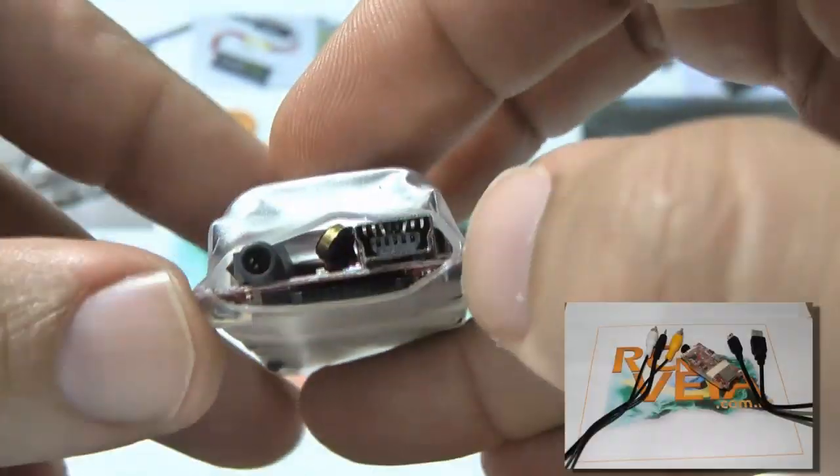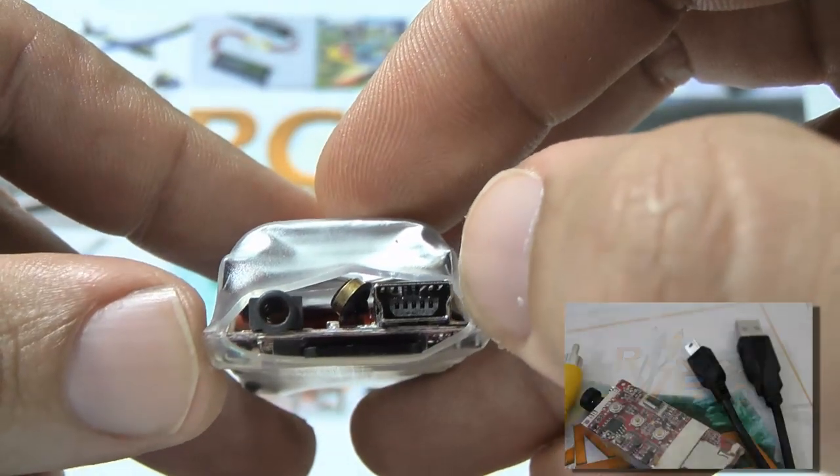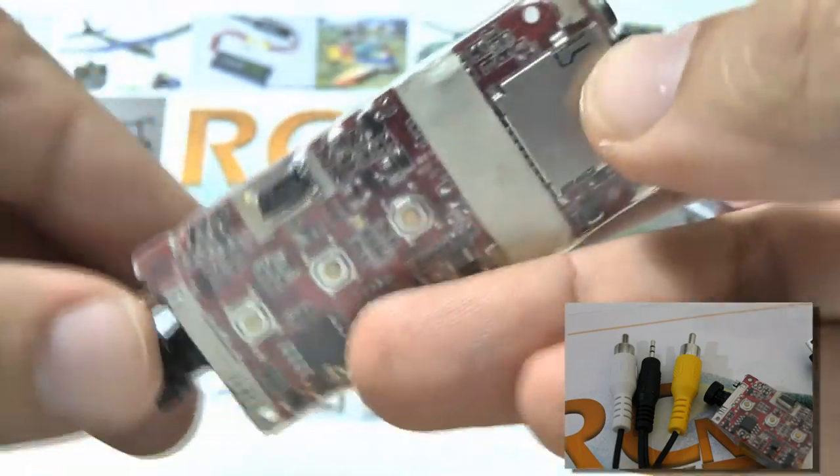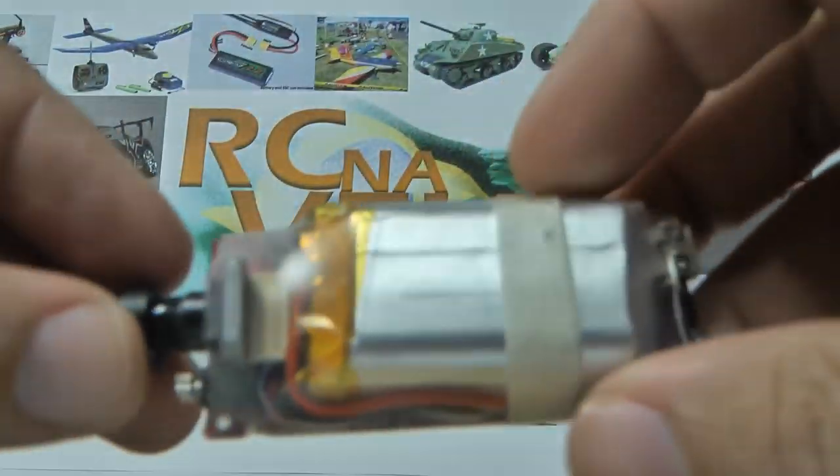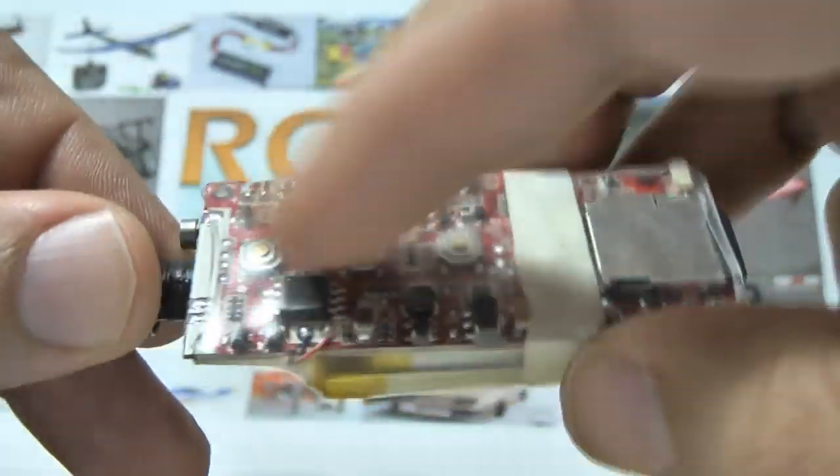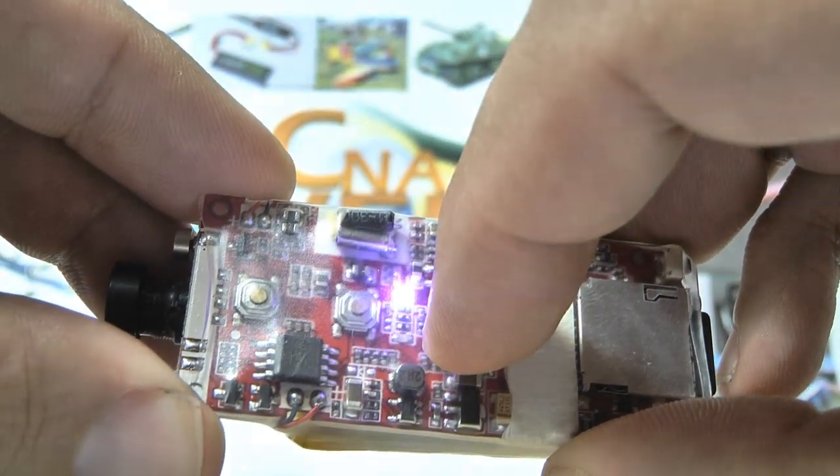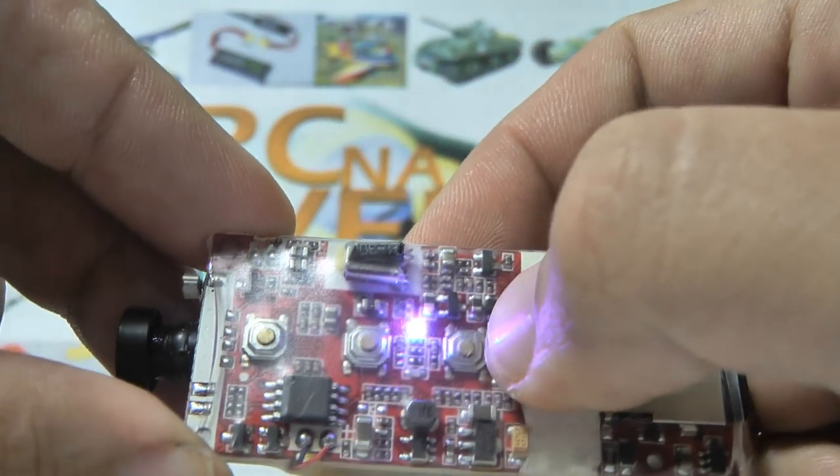There are two connectors: one micro USB and one video output. It's light as I mentioned. The first button turns on the camera—just hold it for two to three seconds.